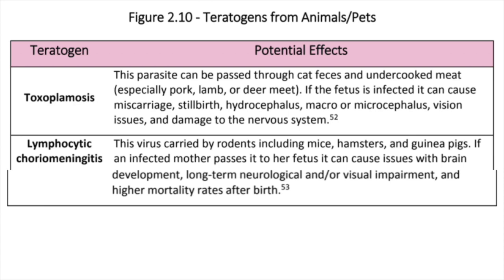Lymphocytic choriomeningitis: this virus is carried by rodents, including mice, hamsters, and guinea pigs. If an infected mother passes it to her fetus, it can cause issues with brain development, long-term neurological and/or vision impairment, and higher mortality rates after birth.